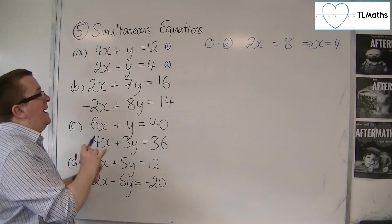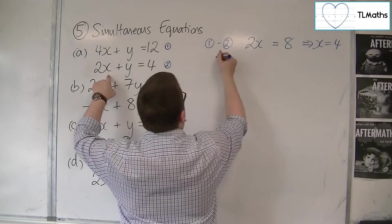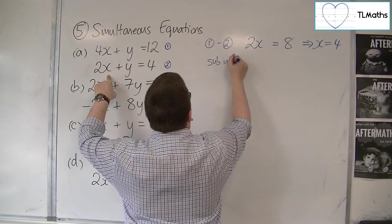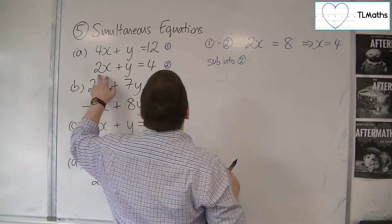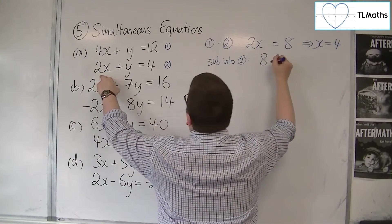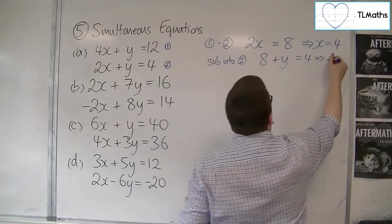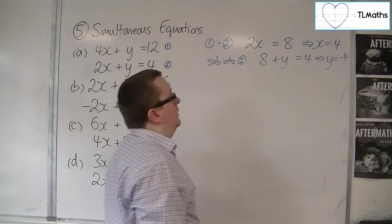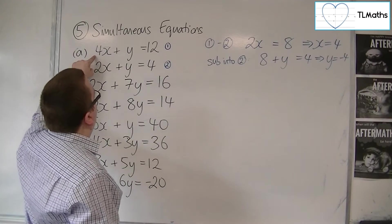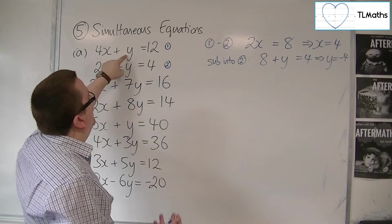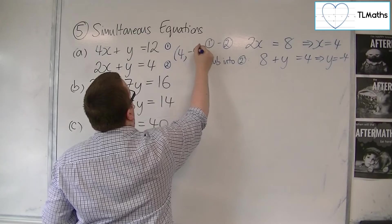You can then substitute that in to either of the two equations. Substitute it into the easiest one. So let's try number 2. It's useful with simultaneous equations to identify exactly what you're doing at each stage. So we get 2 lots of x. So 2 lots of 4 is 8. Plus y is equal to 4. So if I subtract 8 from both sides, I get y is minus 4. So x equals 4, y equals minus 4. You can also check in 1. 4 lots of 4 is 16. Take away 4 is 12. And so it works. So we have x is 4 and y is minus 4.